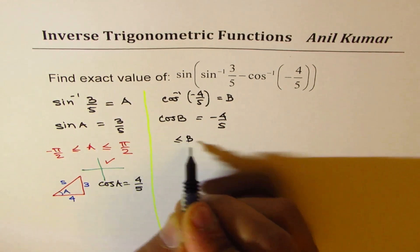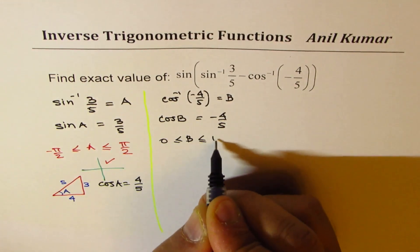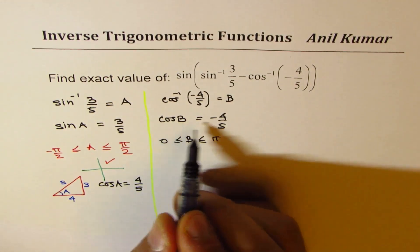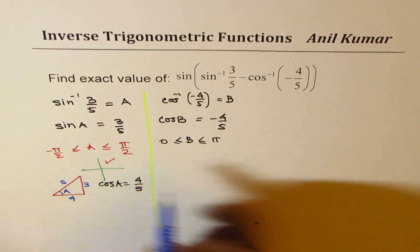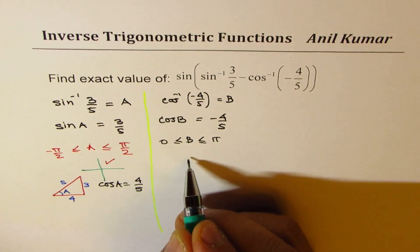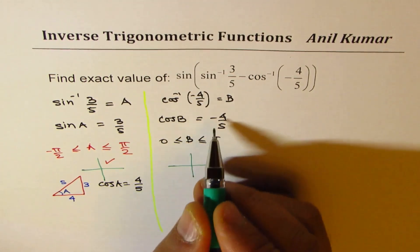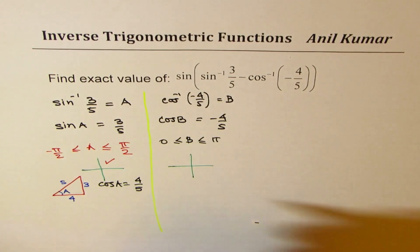Now, B should be within the interval 0 to pi. Since B is negative, that is to say, we have already found that A is in quadrant 1. But since B is negative, we know that B is in quadrant 2.